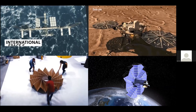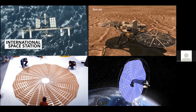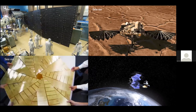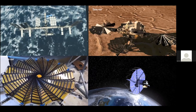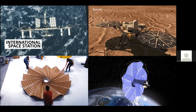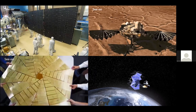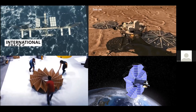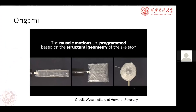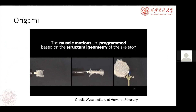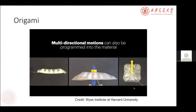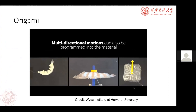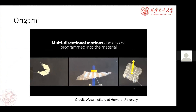The concept and designing ideas of origami have been widely applied in modern technology, such as the design of solar panels for space exploration. Here you can find NASA's design for the International Space Station on the upper left and the Mars rover on the upper right, and two other designs for the solar panels of a satellite below. Origami has also been used in the field of soft robotics — here is an example from Harvard University where origami is used to simulate muscle motions.